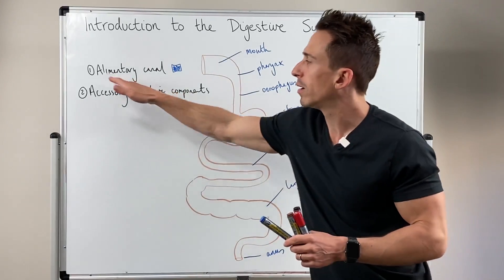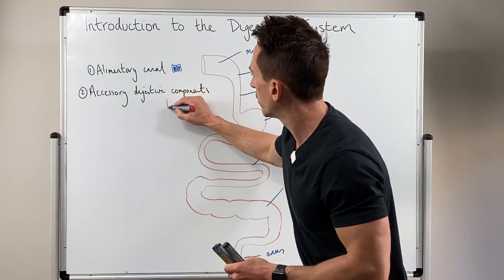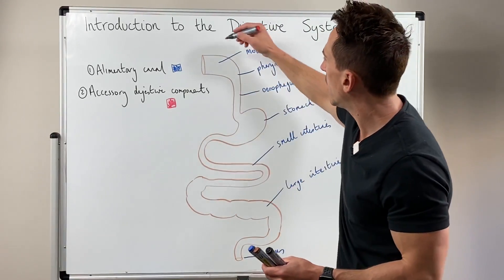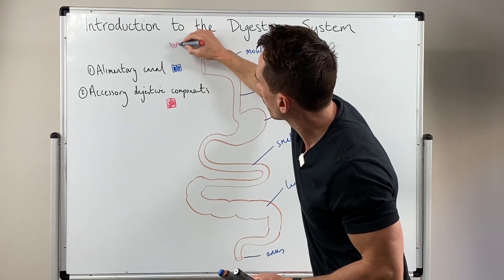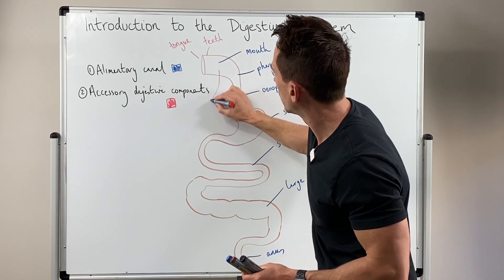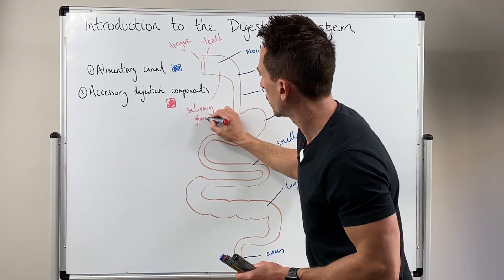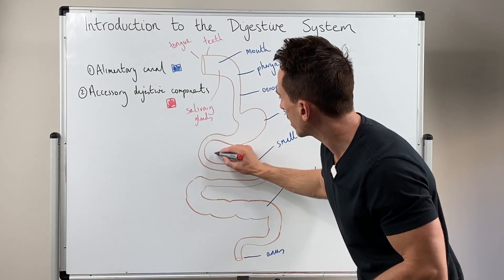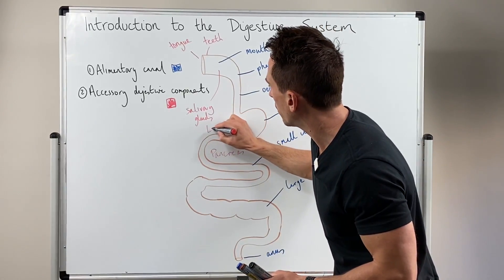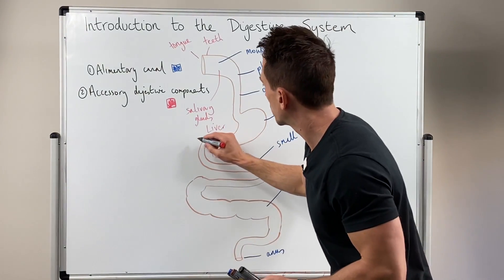Now these in blue are all aspects of the alimentary canal. The accessory components, which we're going to highlight here in red, include those of the oral cavity: the tongue, the teeth, and the salivary glands, of which there are many kinds. It also includes the pancreas, which sits around about here, and the liver, which sits around about here. Now underneath the liver we've got the gallbladder.